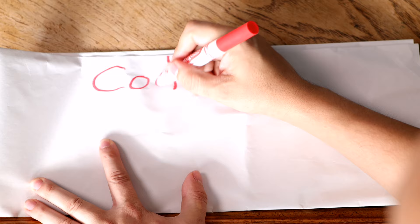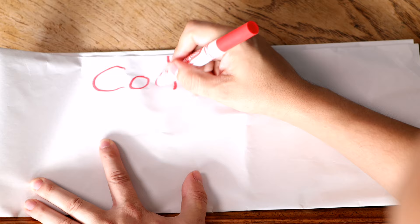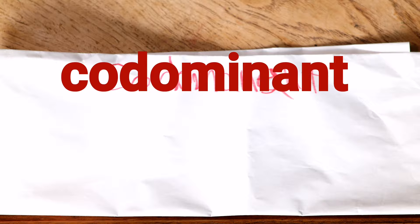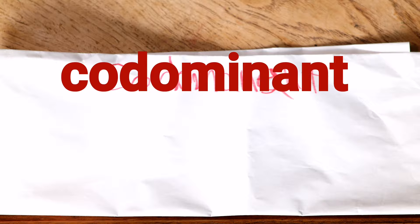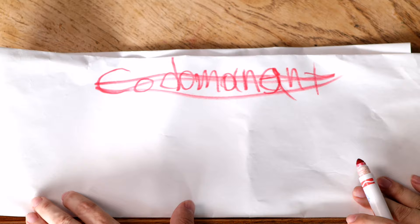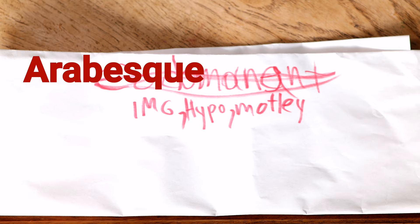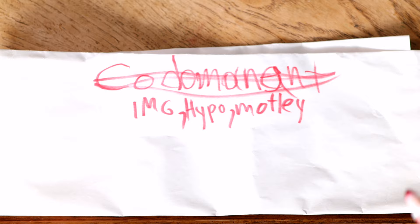The next snakes I'm going to be showing you are co-dominant — and I can't spell it, so leave me alone. Examples: IMG, Hypo, Motley — Motley does it — and there are other ones out there like Raptor. So let's get on with the lesson.